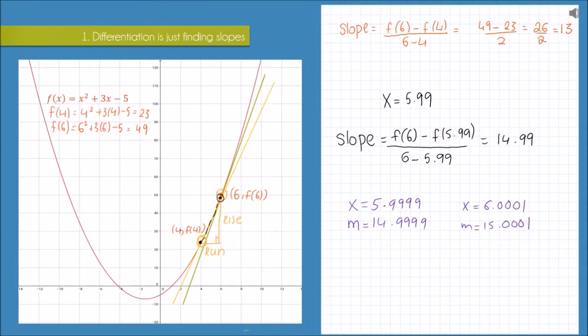But maybe you've noticed that the closer the points are together that I take, the better the approximation is. Or another way of putting it is, the smaller the value of the run, the better the approximation is.